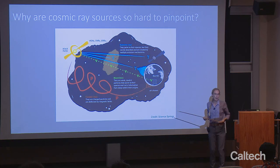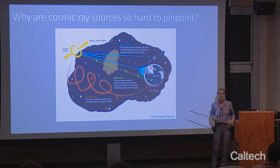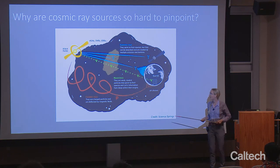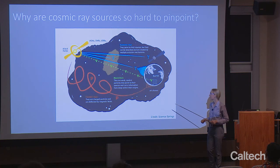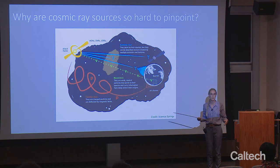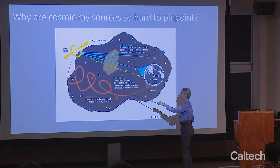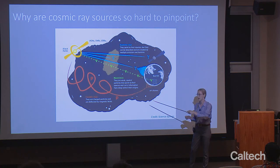People have been wondering about cosmic rays for more than 100 years. Why are they so hard to pinpoint? Why not just catch one, see which direction it came from, and point other telescopes there? You can't usefully do that because cosmic rays are charged. Charged particles experience a force in a magnetic field that's at right angles to the direction they're going, so they travel a winding path through the galaxy's magnetic fields.